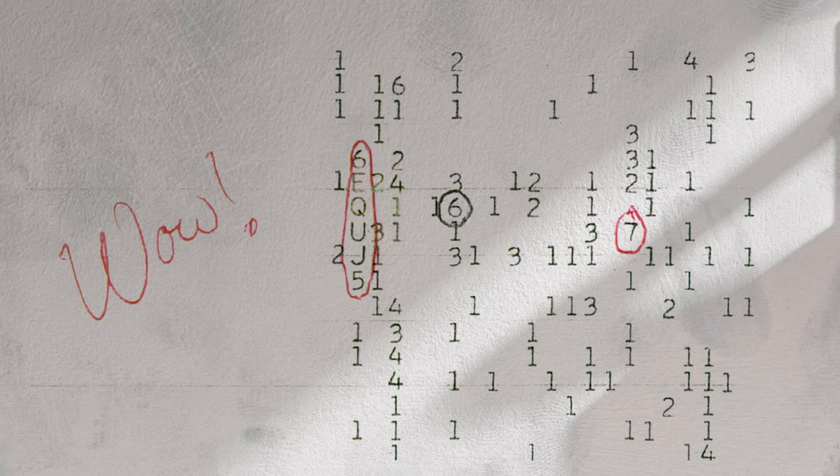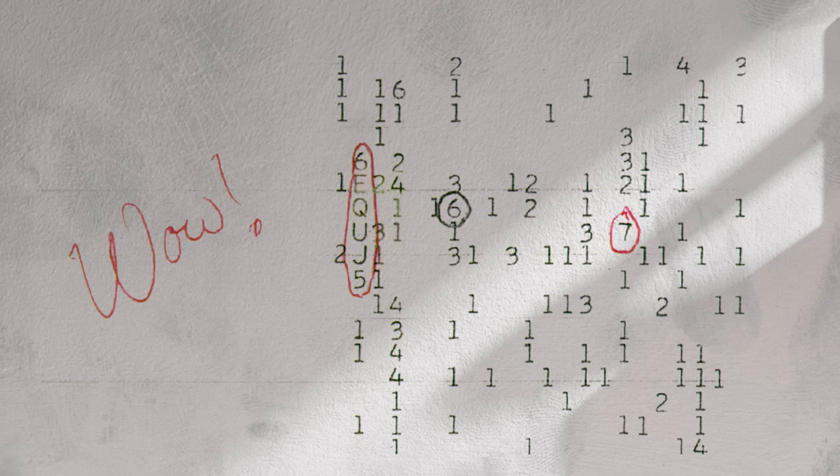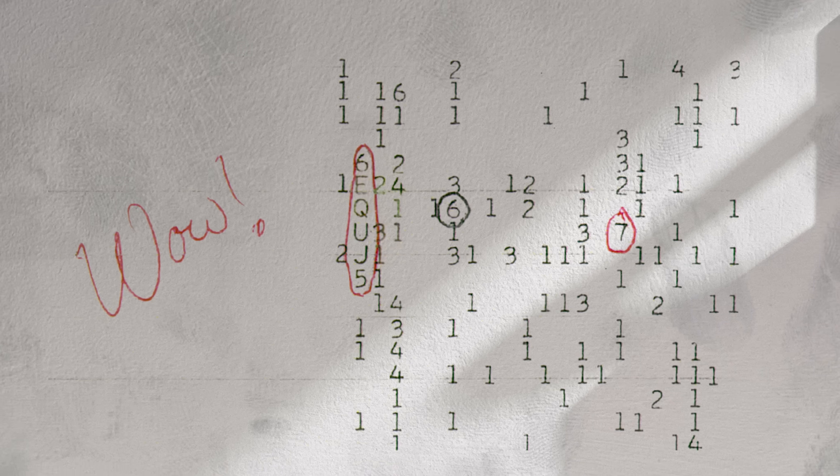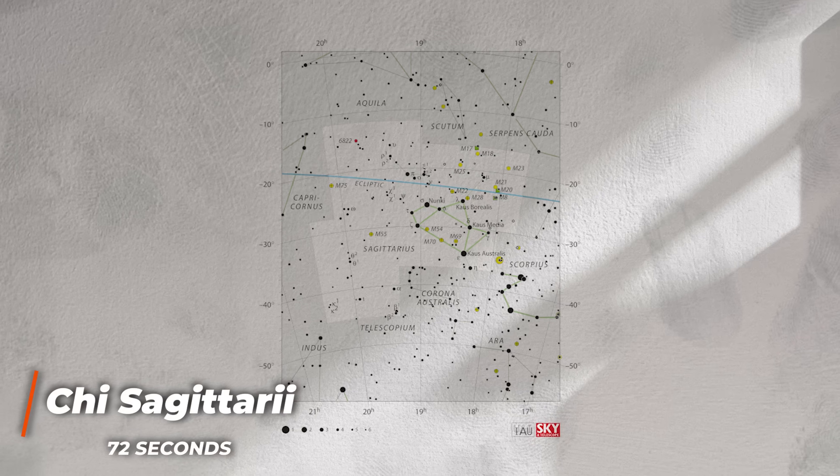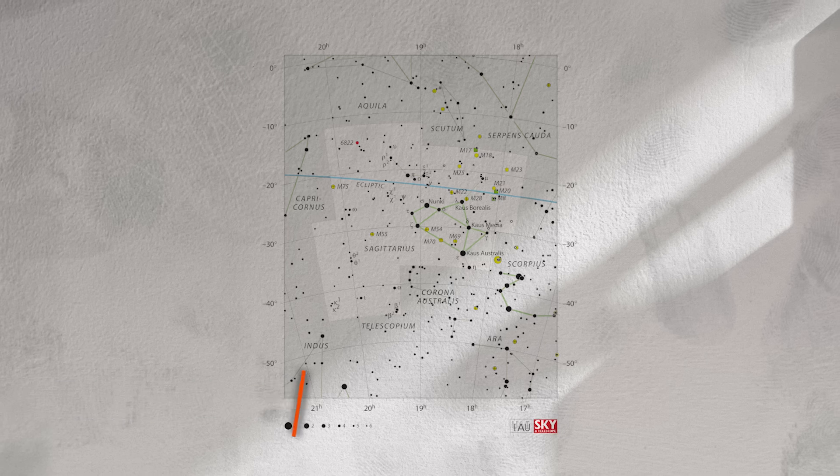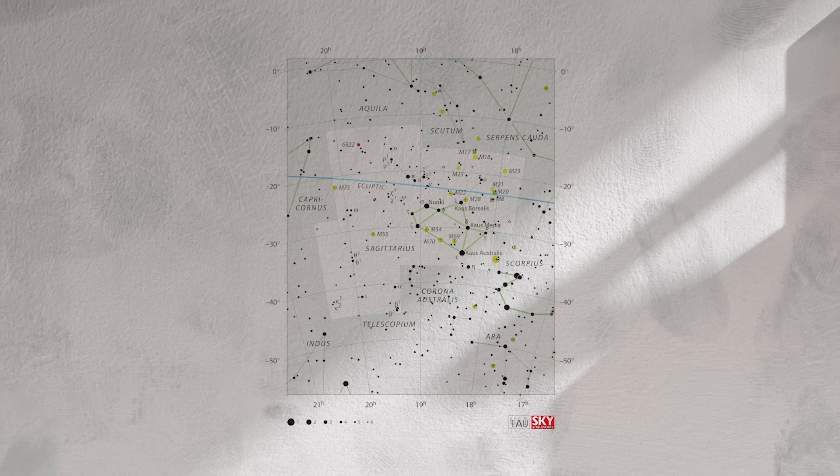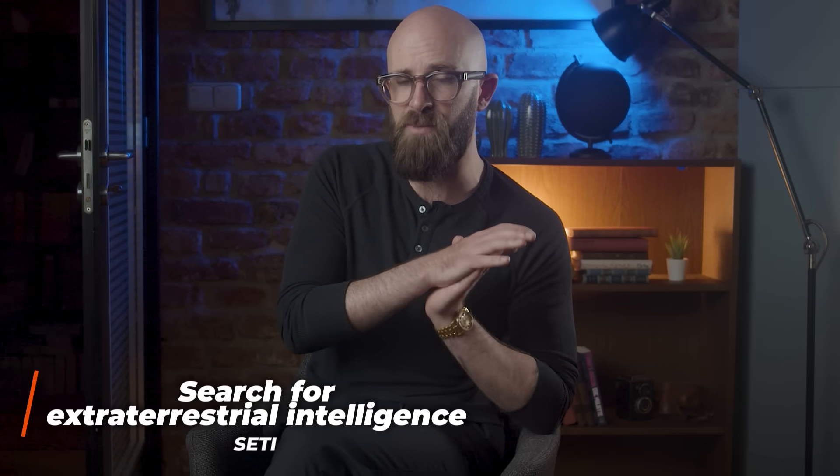Dubbed the wow signal after the single word Ehman wrote next to the findings, what he recorded that day was an intense signal coming from the Sagittarius star system. It lasted 72 seconds. Unfortunately, the signal was only ever heard once, and has never been fully explained, though it did add some much needed vigor to a SETI program that was beginning to flounder.